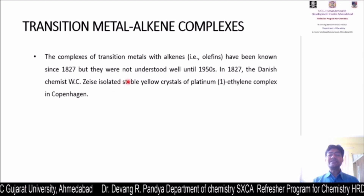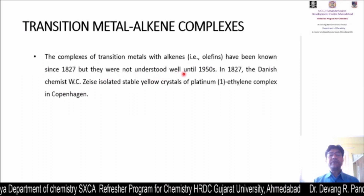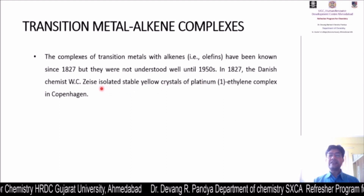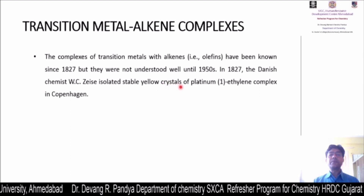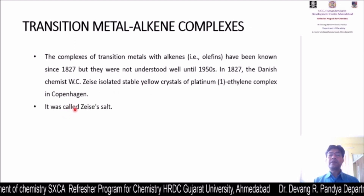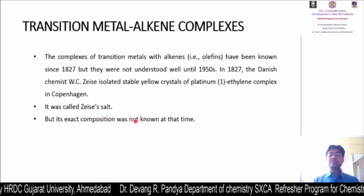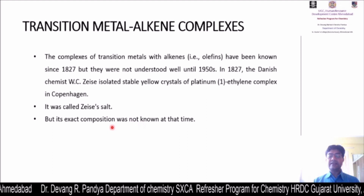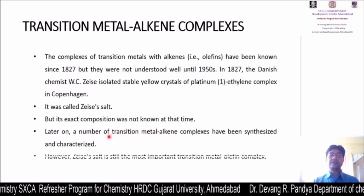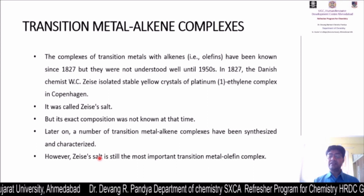Complexes of transition metals with alkenes or olefins have been known since 1827, but were not well understood until the 1950s. In 1827, the Danish chemist W.C. Zeise isolated stable yellow crystals of a platinum-ethylene complex in Copenhagen - the first complex in the series of transition metal alkene complexes, called Zeise's salt. The exact composition of this complex was not known at the time, but Zeise's salt remains the most important transition metal olefinic complex of its kind.